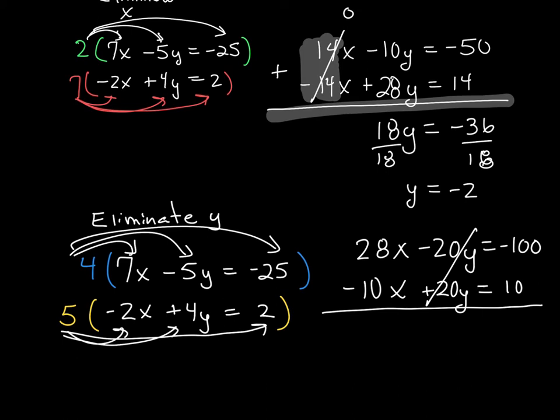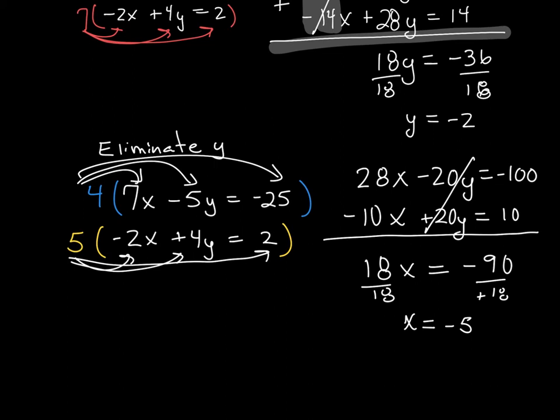Now I'm left with 18x equals negative 90. When I divide both sides by 18, I'm left with x equals negative 5. So my ordered pair solution, always x then y, is going to be negative 5 comma negative 2.